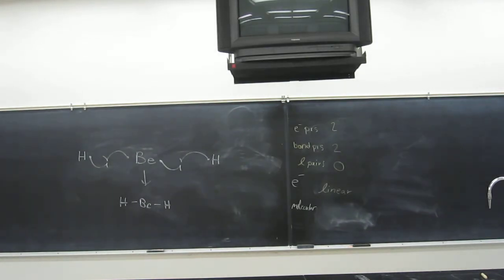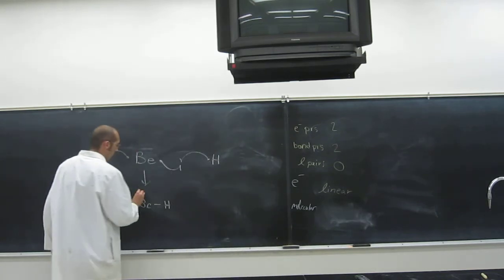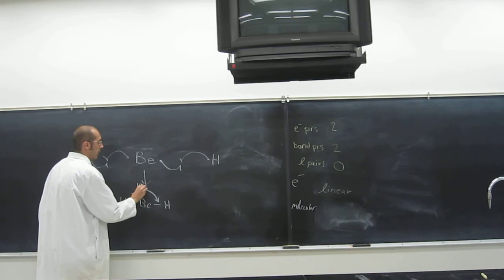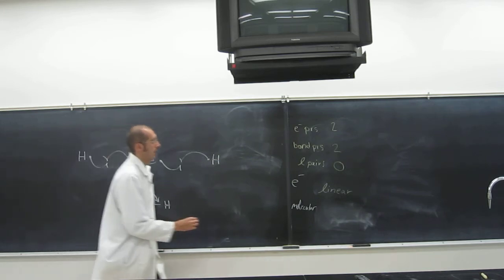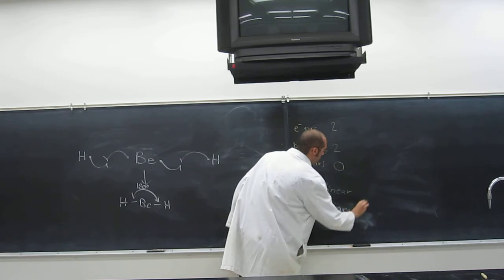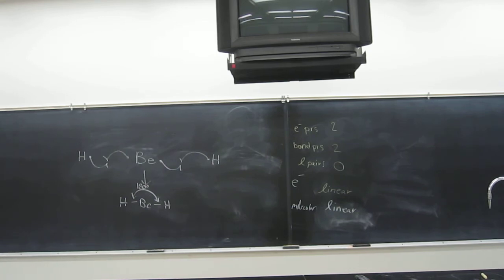And this one is a linear molecule which we can have a bond angle for. 108? It's 180 bond angle. So, if I can find the movies. So, that bond angle there is 180. Does that make sense? Any questions on that one?